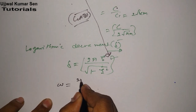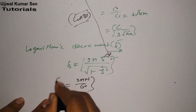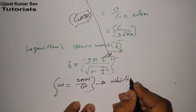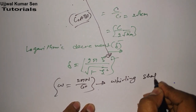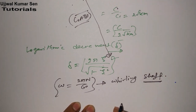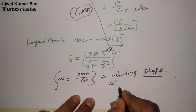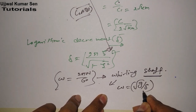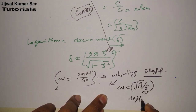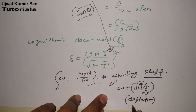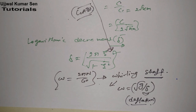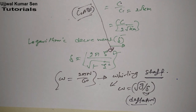One more important thing: angular velocity ω = 2πN/60. This relation is most important for solving numerical problems related to whirling of shaft. In the case of whirling of shaft, we know that ω = √(g/δ), where this delta is known as the deflection of the shaft.